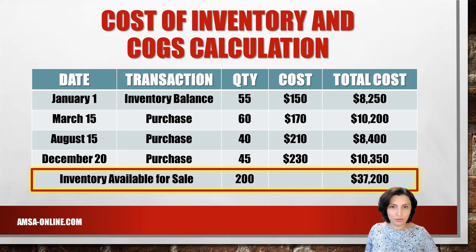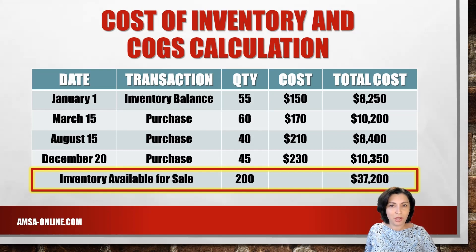The number of units are multiplied by their respective unit cost to determine the total cost of beginning inventory and all purchases. All total costs are added, and the total amount of goods available for sale is $37,200.